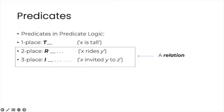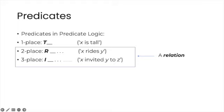A terminological point, a predicate with two or more places is called a relation. So the first predicate in this list is not a relation, but the other two are.